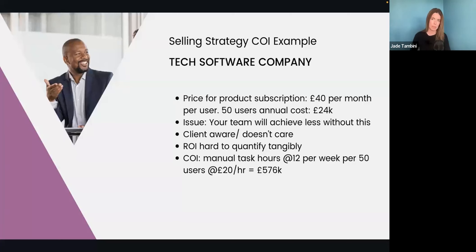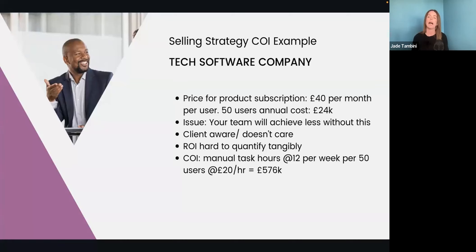I don't think it's expensive, Mrs. Buyer. Let me talk to you about why. Talk to me about what do you pay your workers per hour? How long are they spending per week on carrying out this manual task? Oh, 12 hours a week. There are 50 of them — that's £576,000 pounds. So the cost of inaction to not invest in this tool — let's say it's an AI productivity tool — is significant. People don't see that the efficiencies to be made through AI are literally game changing in companies.